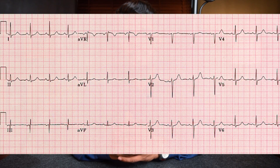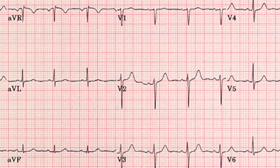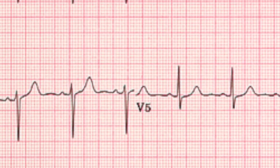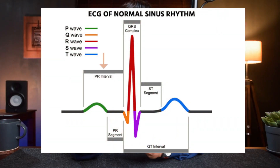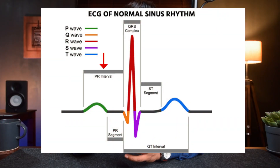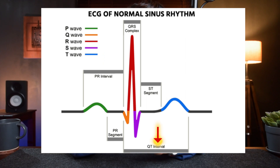Here's an example of the ECG graph with annotations. As you can see, the P wave precedes the QRS complex, which is followed by the T wave. The PR interval represents the time it takes for the electrical impulse to travel from the SA node to the ventricles. The QT interval represents the time it takes for the ventricles to contract and then relax.